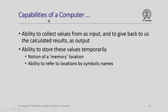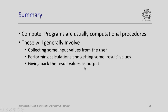More importantly, a computer has the ability to collect values from us as input and to give back the calculated results as output. It has the ability to store values temporarily, so there will be a notion of a memory location which we shall see in the next lecture. It also has the ability to refer to these locations by symbolic names. In summary, computer programs are usually computational procedures that involve collecting input values from the user, performing calculations, and giving back result values as output.